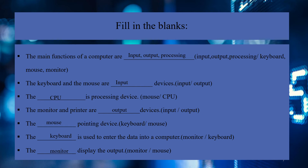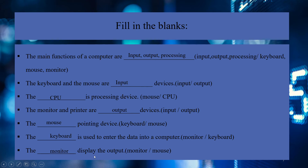Now for the fill-in-the-blanks exercise: The main functions of a computer are input, processing, and output. The keyboard and the mouse are input devices. The CPU is the processing device. The monitor and printer are output devices. The mouse is a pointing device. The keyboard is used to enter data into a computer. The monitor displays the output.